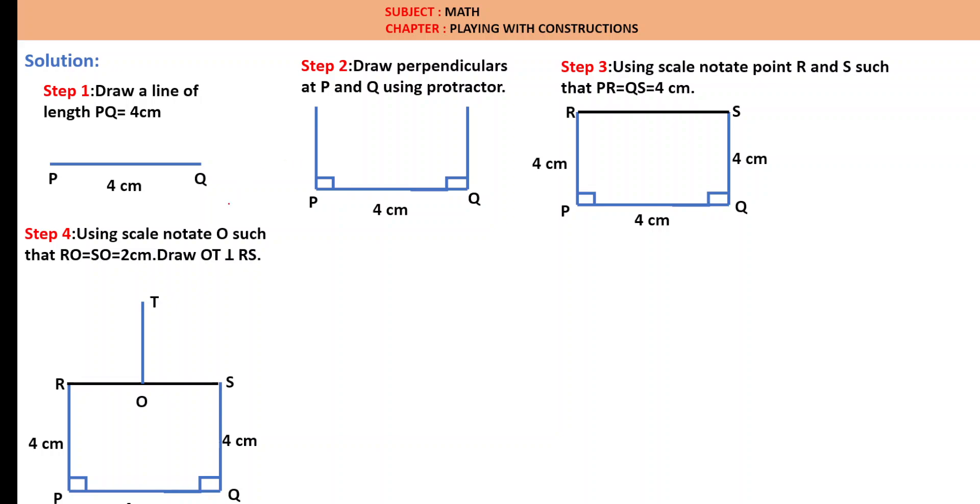Step 4: Using the scale, notate O such that RO is equal to SO is equal to 2 cm. O is the midpoint. RO is equal to 2 cm, SO is equal to 2 cm. And we are drawing a perpendicular OT plus RS. This is perpendicular straight line. You can draw with a scale.